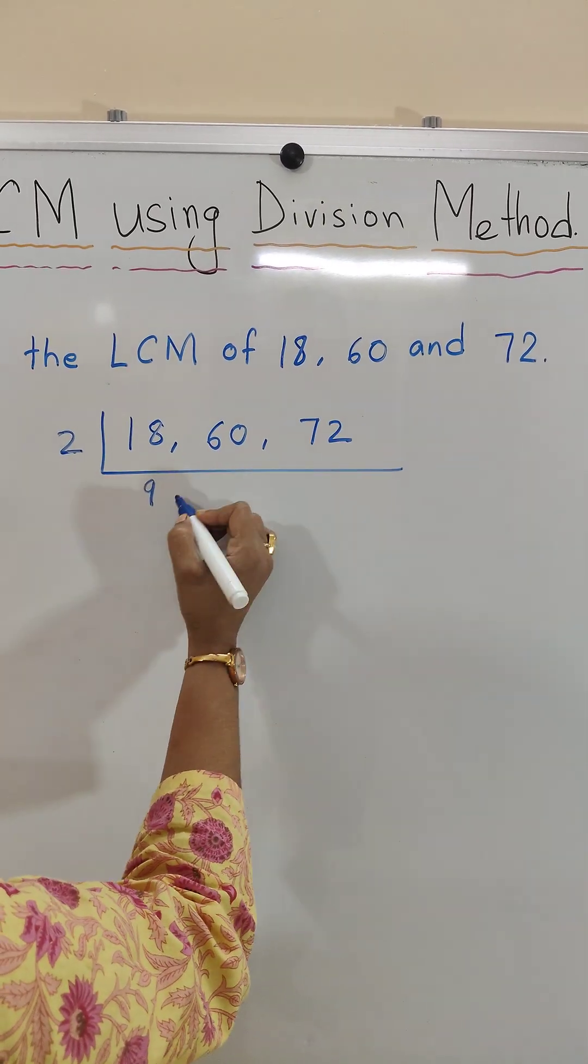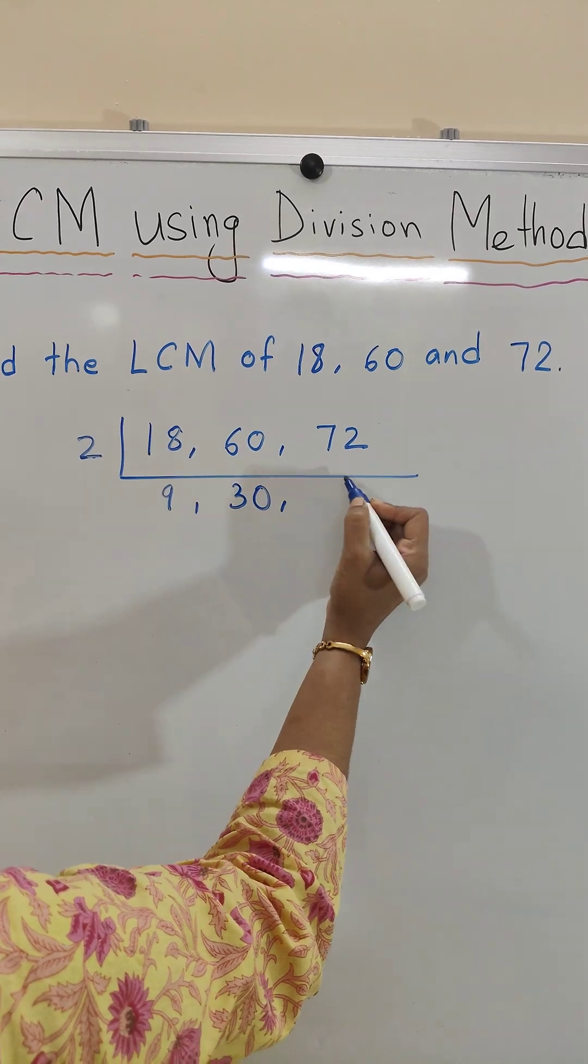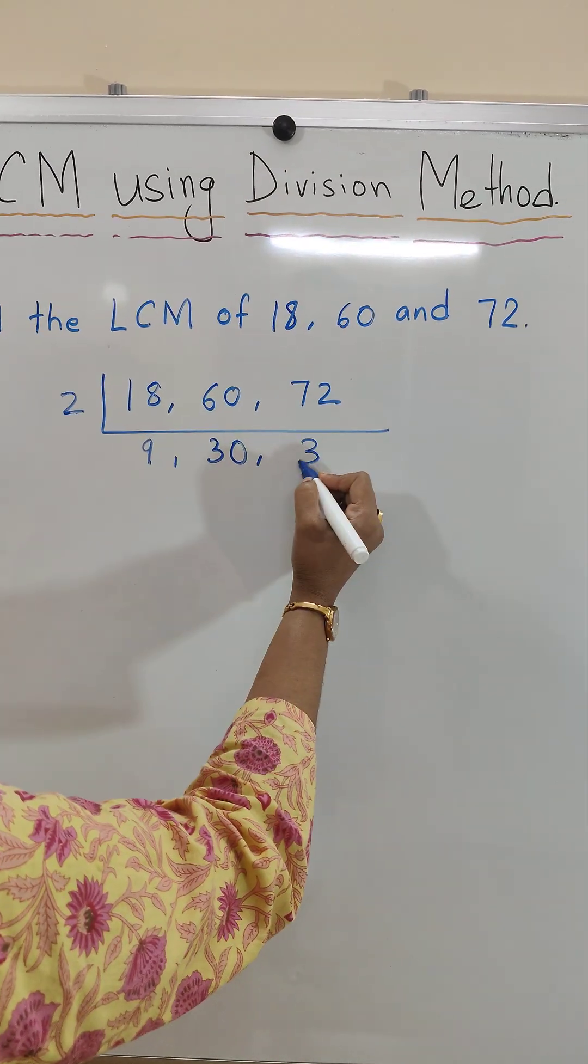18 divided by 2 is 9. 60 divided by 2 is 30. 72 divided by 2 is 36.